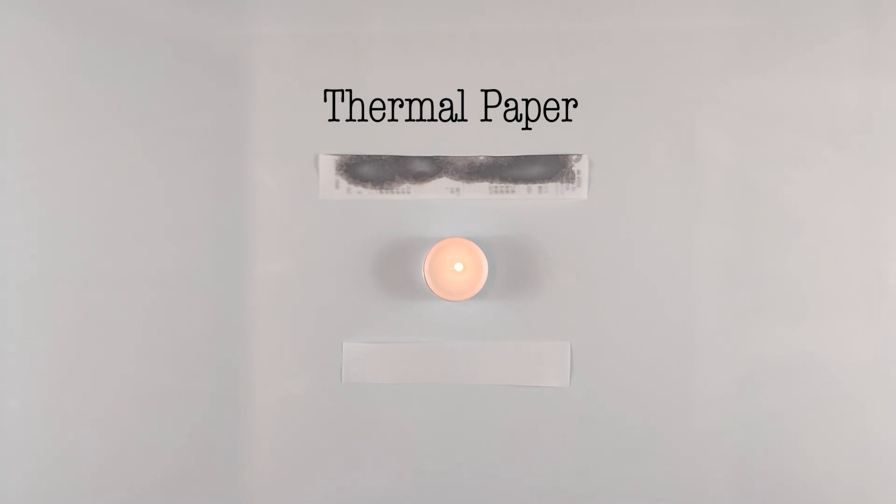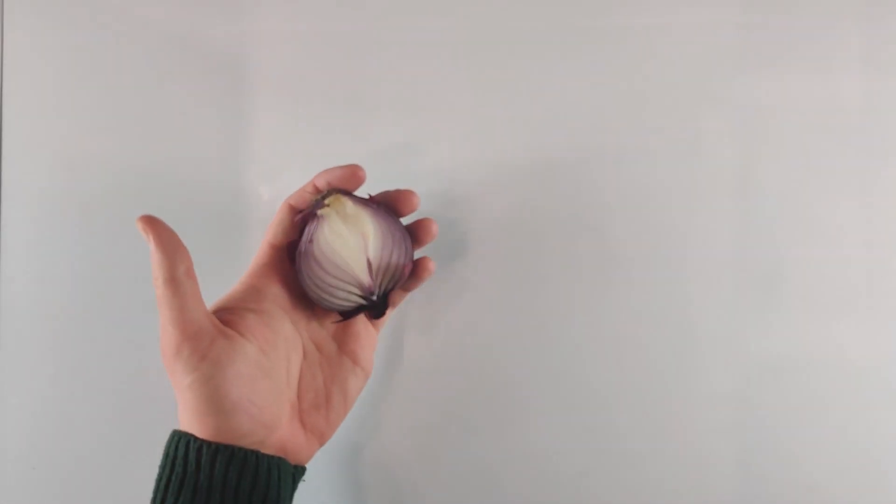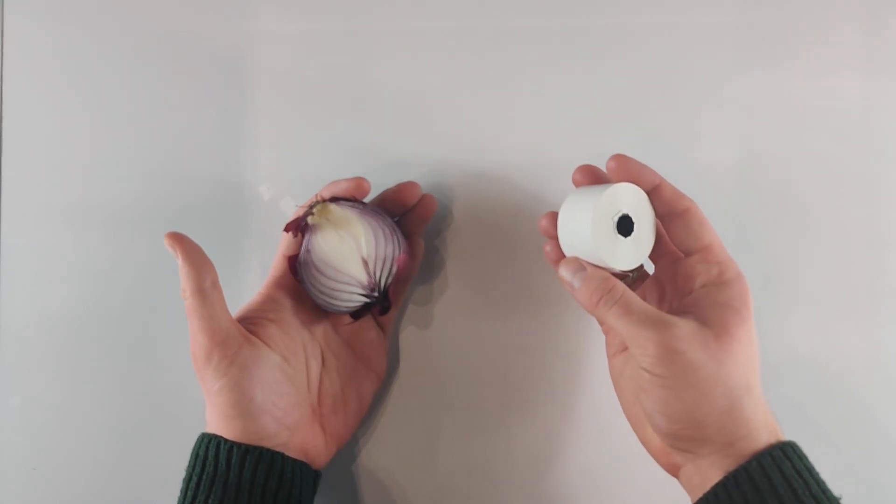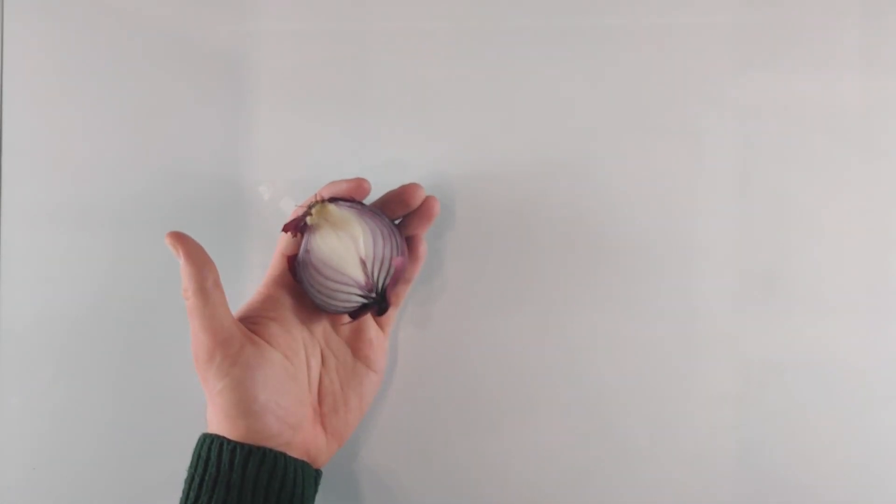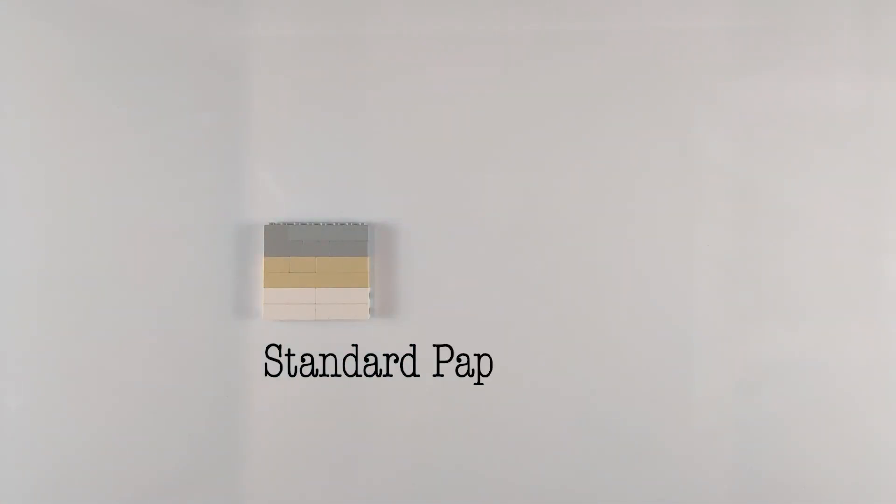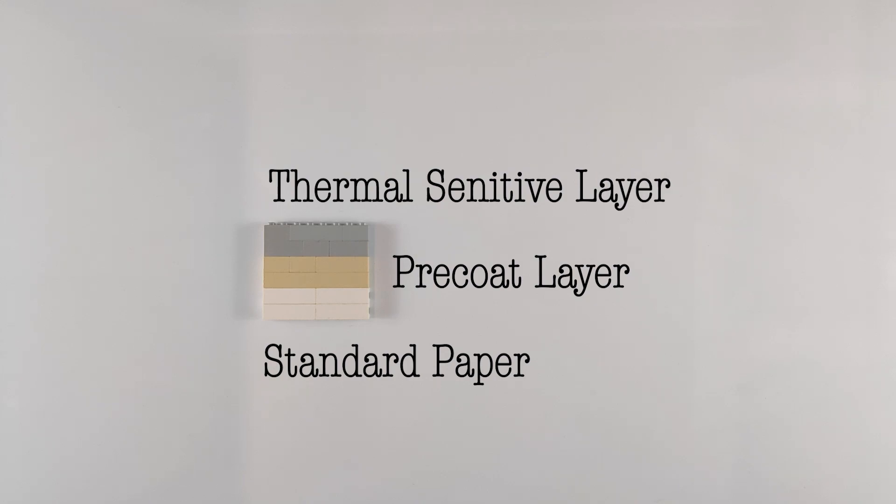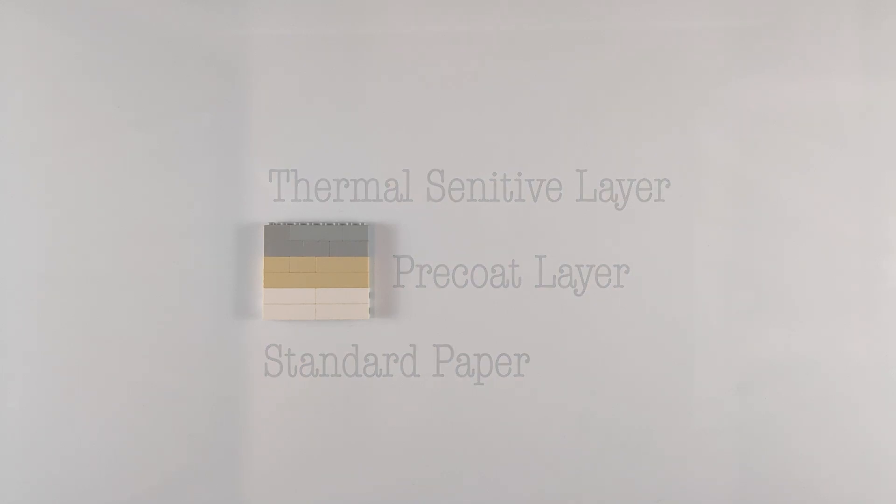I'll try to briefly discuss its structure. As onions have layers, thermal paper also has layers. In most cases it is standard paper that has been coated with a pre-coat layer and a thermal sensitive layer also known as a thermal reactive layer. Why are these layers used?